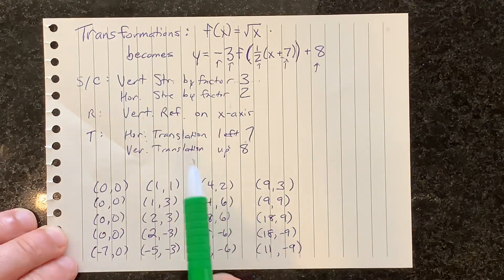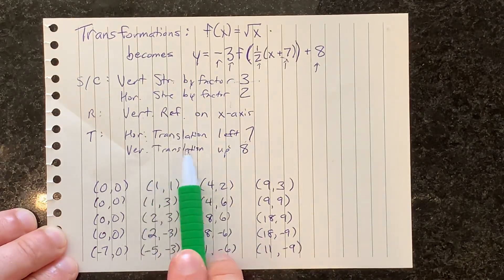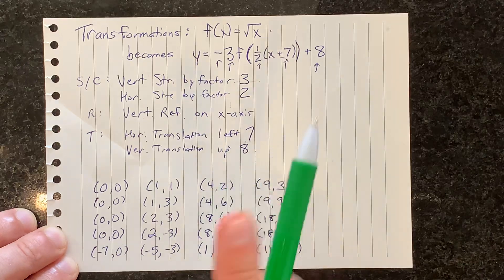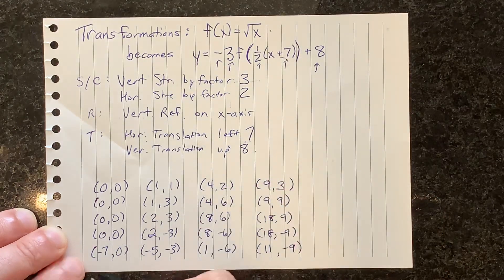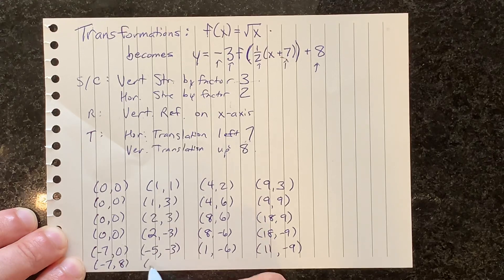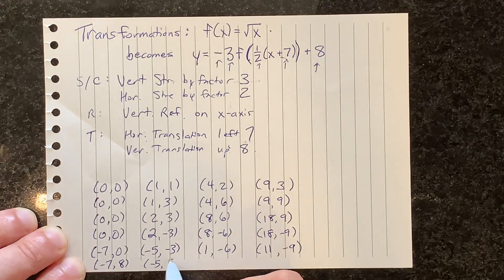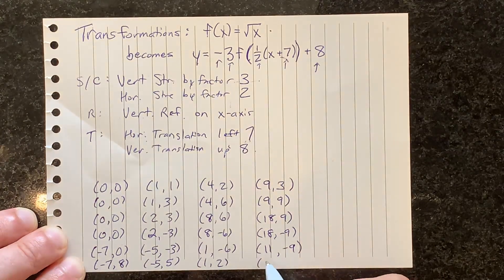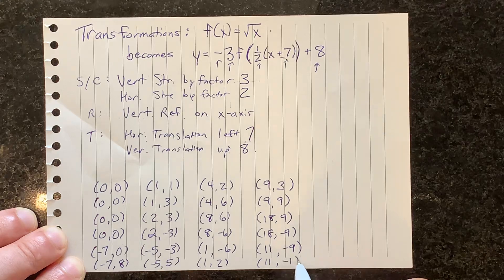Lastly, I need to translate all of these points up eight — I add eight to each of the y's. Negative seven, eight. Negative five: when I add eight to that, I get positive five. When I add eight to the next, I get positive two. When I add eight to the last, I get negative one. Nice.